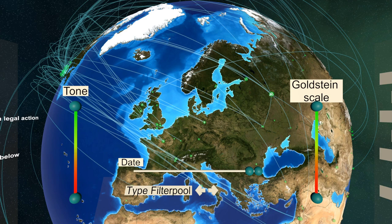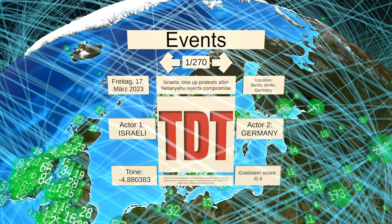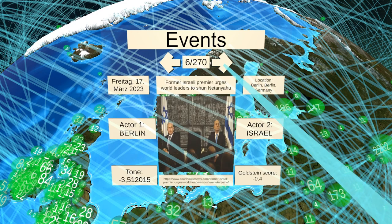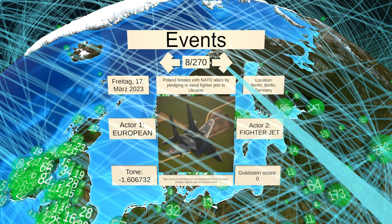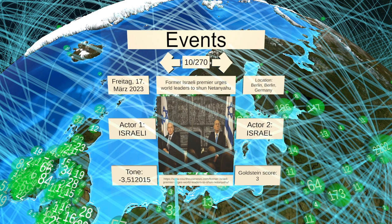Once you've adjusted the filters to only display events you're interested in, you can take a closer look at the events themselves. By selecting a group on the globe, for example Berlin, a list of corresponding news reports will be shown. Here you'll see the date of the report, the location, participating actors, the tone of the report and its value on the Goldstein scale. You can scroll through the reports in a group using the arrows above. For further research, you can open the news report in your PC's browser by clicking the link below.